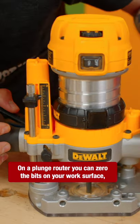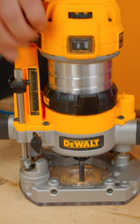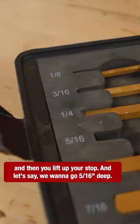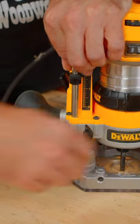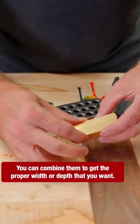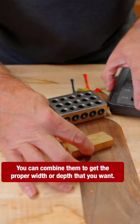You can zero the bits on your work surface and then you lift up your stop. And let's say we want to go five sixteenths inch deep. I set that in there, I tighten that down. You can combine them to get the proper width or depth that you want.